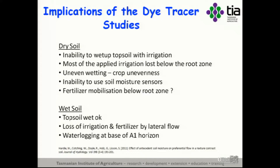Just a couple of implications — let's be farmers for a moment. When soils are dry, you have almost complete inability to wet up the topsoil with irrigation or rainfall. Nearly all of the irrigation applied went beneath the root zone into the subsoil — between 27 and 86% of applied irrigation was lost below the root zone. You had very uneven wetting of the topsoil, causing crop unevenness. You have complete inability to use a soil moisture sensor meaningfully — move it two centimetres to the left, you'd get a totally different reading. And fertiliser will be mobilised beneath the root zone, creating issues not only for production but for environmental management.